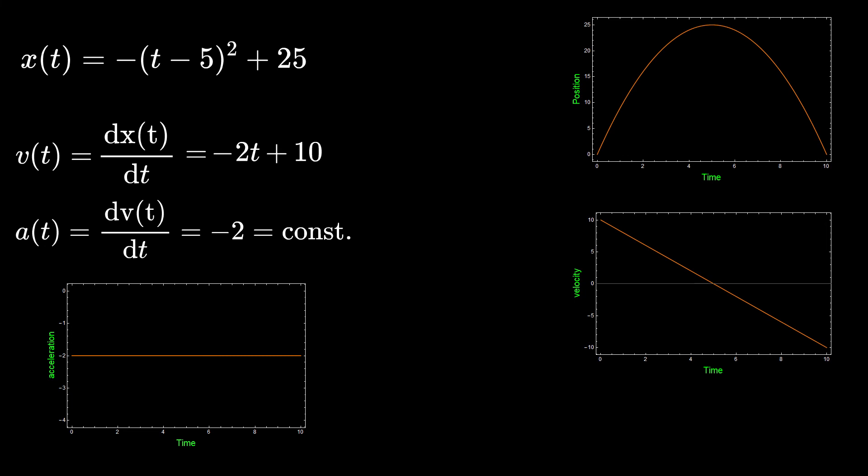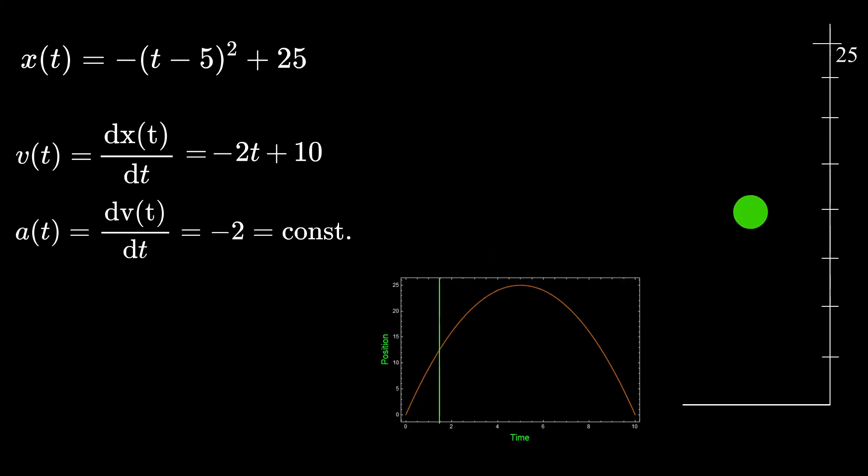Since acceleration is constant, better example for this trajectory would be a vertical throw in a gravitational field. As you can see in this animation, where our ball started off with some non-zero initial velocity against a constant gravitational acceleration of 2 meters per second squared.